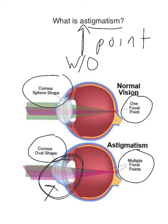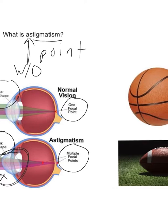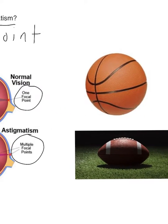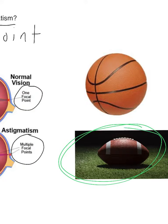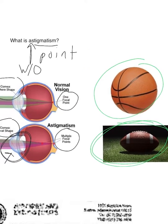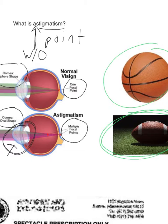I tell my patients that the cornea in astigmatism looks like a football — it's oval-shaped. When you have a normal eye, the cornea is more spherical, like a basketball. So in astigmatism, your cornea is like a football; in a normal eye, your cornea is like a basketball.